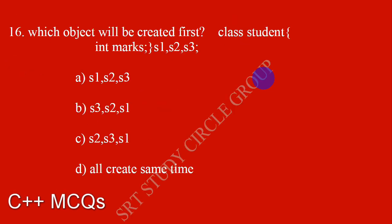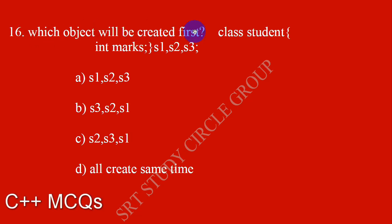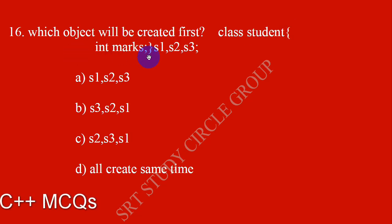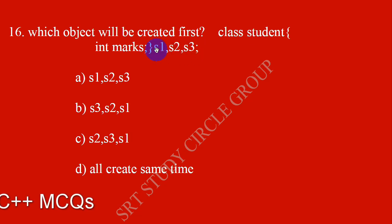Which object will be created first? Given the class Student with integer marks, and objects s1, s2, s3 — the first object created is s1.